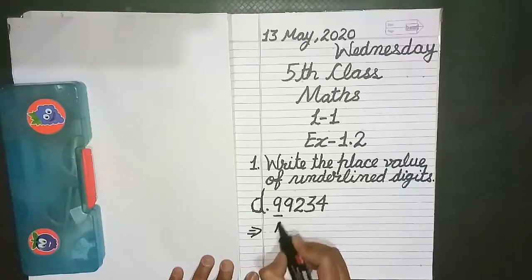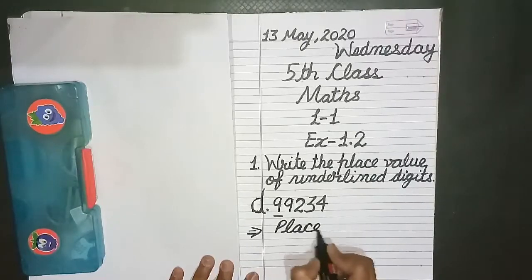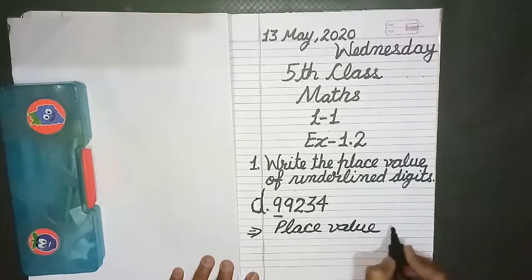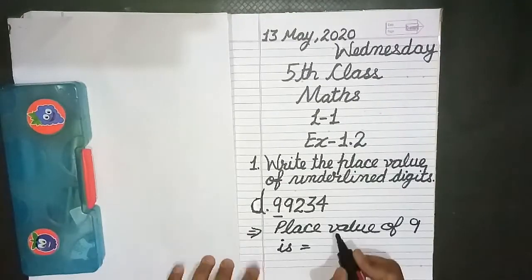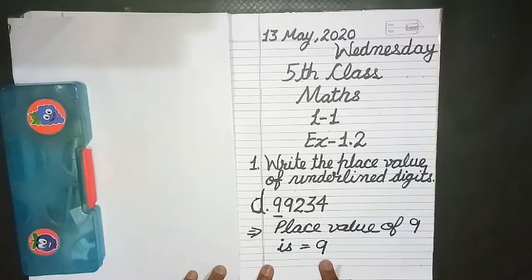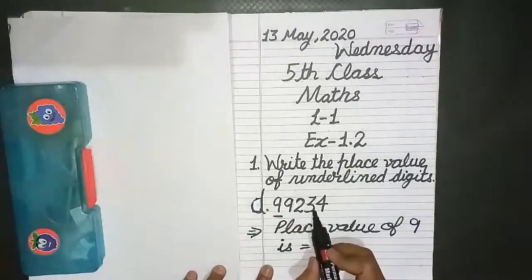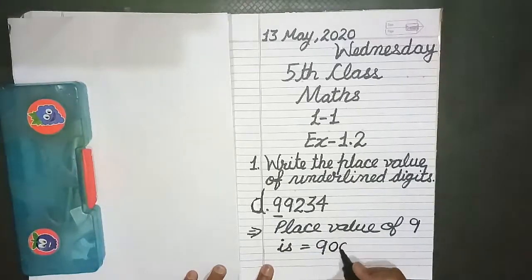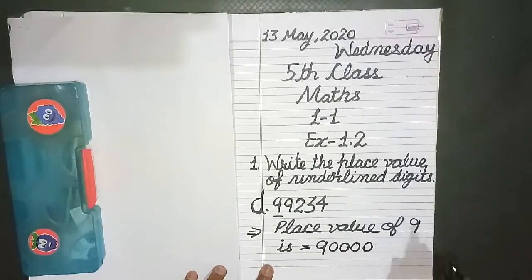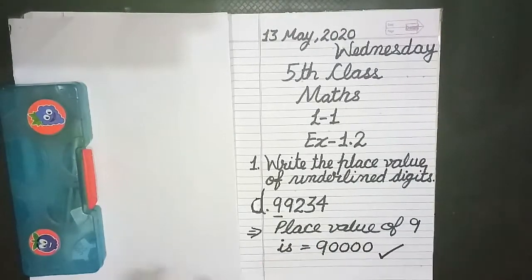So place value of 9 is given by, let's write 9, which is underlined digit. Now let's check how many digits are there: 1, 2, 3, 4. So we will write four zeros at right hand side of 9. So this is the place value of 9.